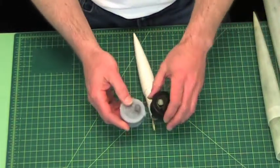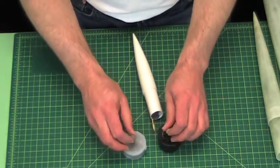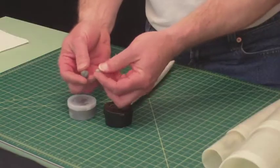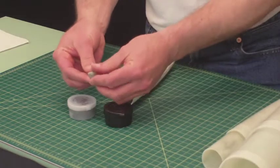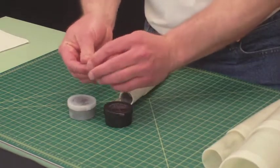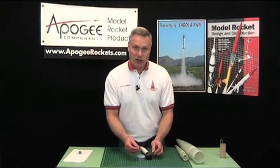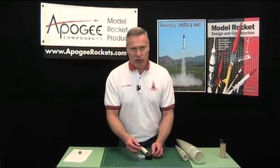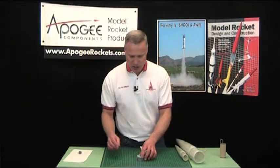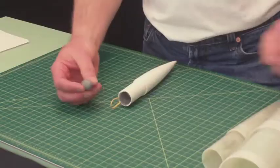Now the fix-it epoxy is mixed up - it's equal parts of A and B. When you smoosh them together, you just kind of work at it until you get a uniform color. I like to do it for about three to five minutes to make sure it's all mixed pretty good, and then when you're done it'll be like this.